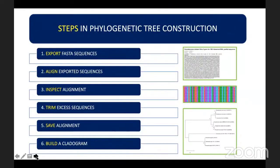There are six basic steps in phylogenetic tree construction. These include: exporting FASTA sequences, aligning exported sequences, inspecting the alignment quality, trimming of unaligned sequences, saving the aligned sequence patterns, and finally building the cladogram.